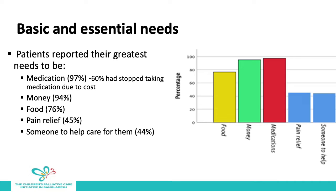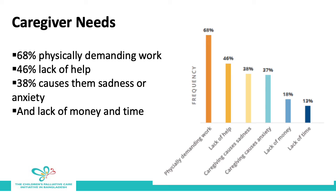We also looked at patients' basic and essential needs. When asked 'what is your greatest need,' 97% said medication, and most had stopped taking medications because of cost. Money was their second greatest need, followed by food, pain relief, and someone to care for them. Caregivers' needs included the fact that it was very physically demanding to care for the sick individual, they had no help, caring caused them sadness or anxiety, and they reported a lack of time and money.